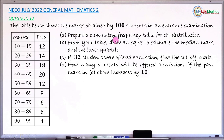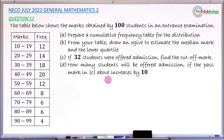Question (a) says: prepare a cumulative frequency table for this distribution. Question (b) asks you to draw a cumulative frequency curve — an ogive — and use that curve to estimate the median and the lower quartile. Question (c) says if 32 students were offered admission, find the cutoff mark. Question (d) asks how many students would be offered admission if the pass mark from (c) is increased by 10.